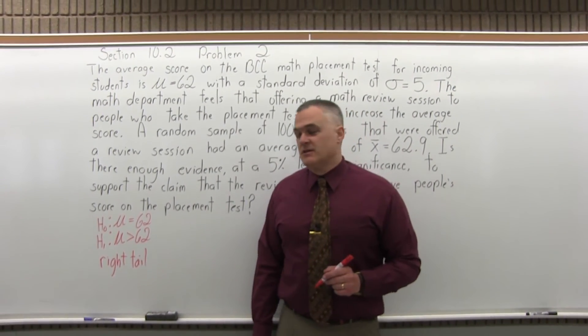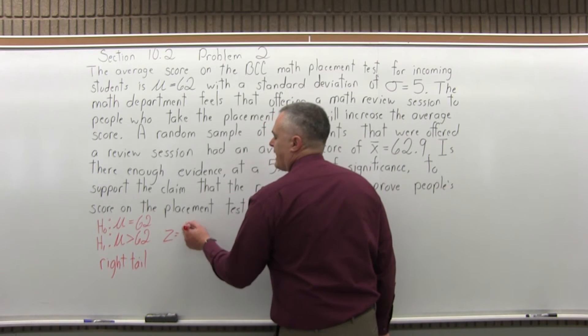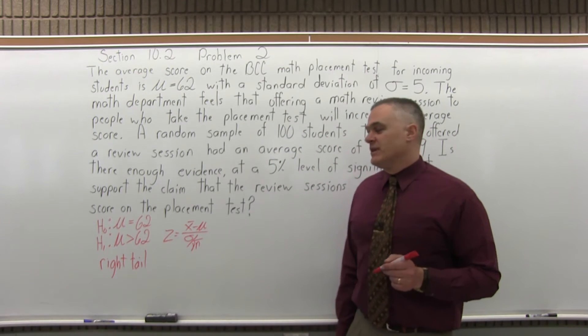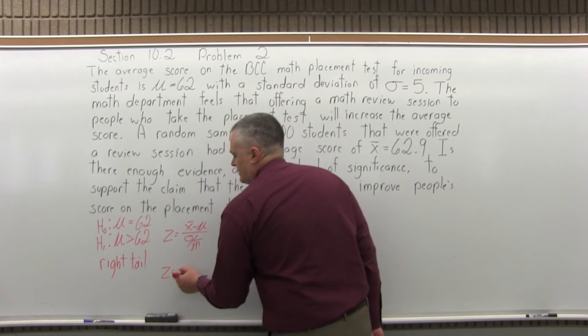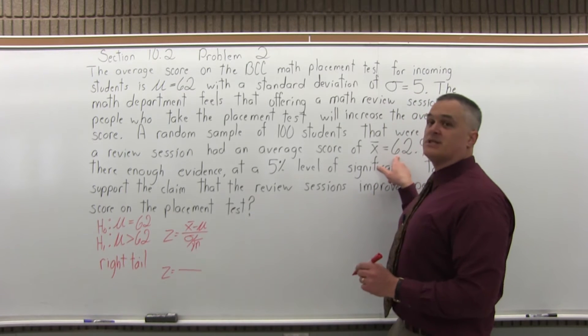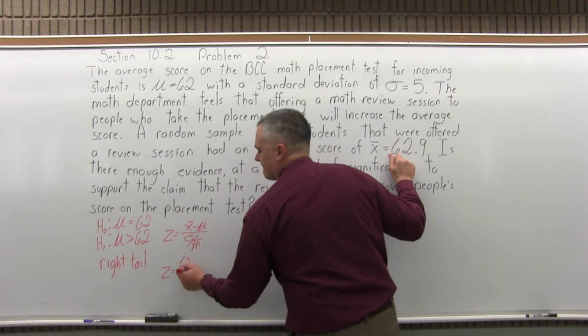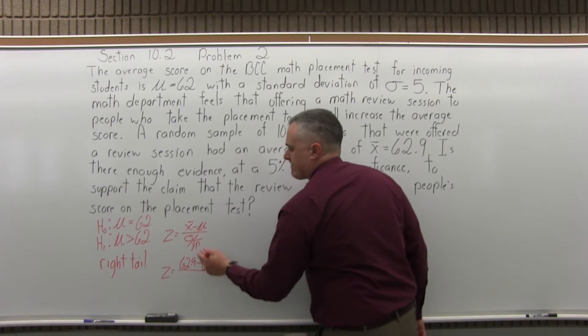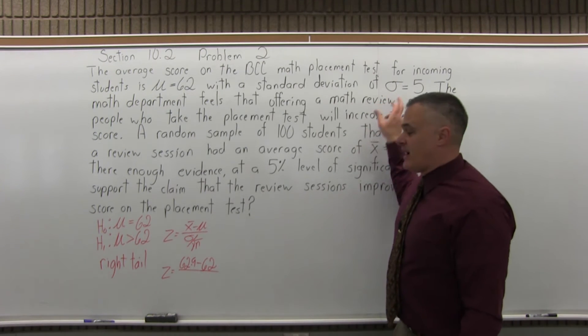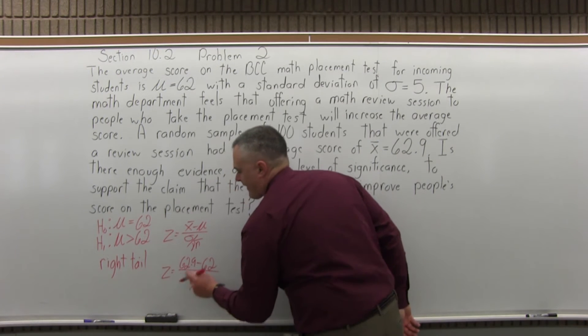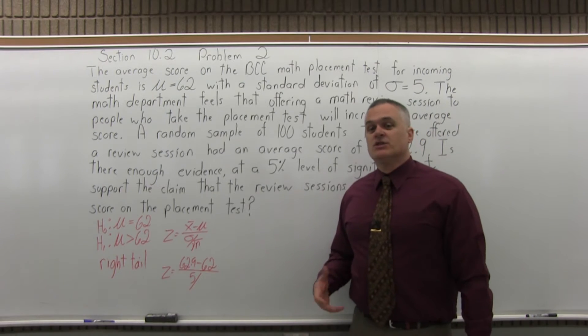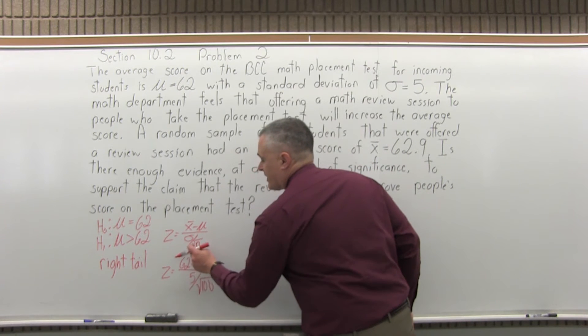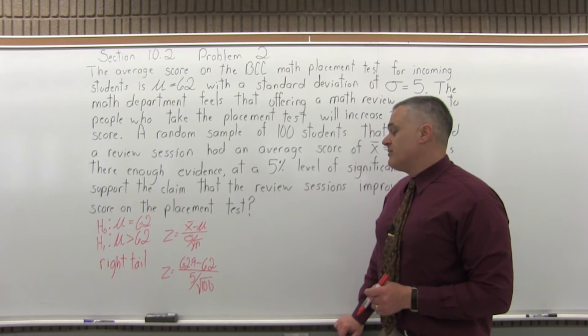Step four is compute the value of z. And the formula we use is z equals x bar minus mu divided by sigma over square root of n. That's step four. We have to fill in that formula and get an answer. So z equals x bar. X bar, the question said, was 62.9 minus mu. And the question says that mu is 62. Sigma, the standard deviation of the population, is given to be 5. Over square root of n. n is the size of the sample. So this particular problem has a sample of 100. So that would be n, n is 100. Don't forget that 100 is under a square root. That's a fairly common mistake.